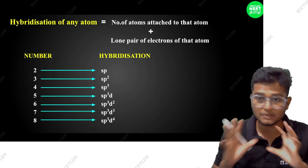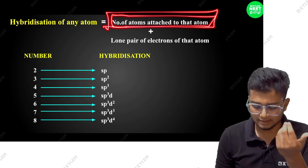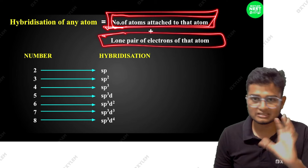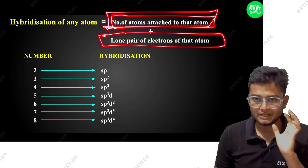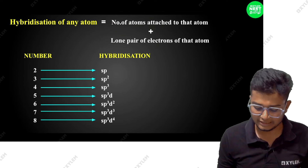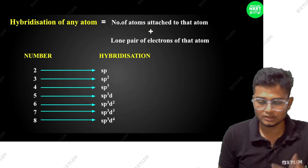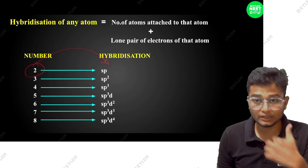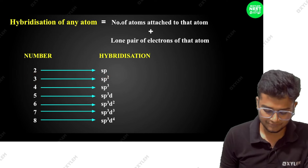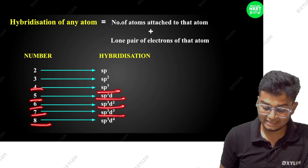How many elements are joined to the central atom? Number of atoms attached to the central atom, plus the number of lone pairs on the central atom — add those two numbers together. If the value is 2, hybridization is SP. If 3, SP2. If 4, SP3. If 5, SP3D. If 6, SP3D2. If 7, SP3D3.